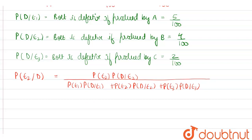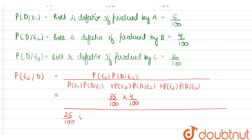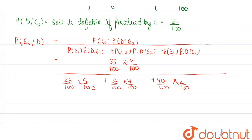Substituting the values: the numerator is 40 by 100 into 2 by 100. The denominator is 25 by 100 into 5 by 100, plus 35 by 100 into 4 by 100, plus 40 by 100 into 2 by 100. Since 100 into 100 is common in numerator and denominator, simplifying gives 80 upon 125 plus 140 plus 80, which equals 80 upon 345, reducing to 28 by 69.